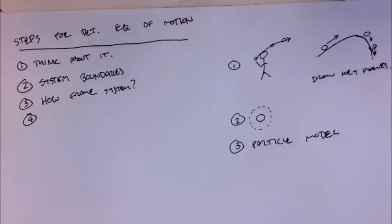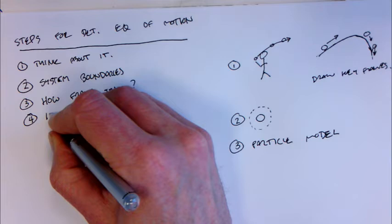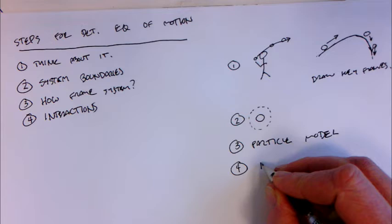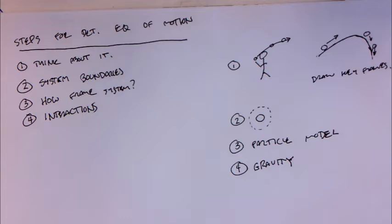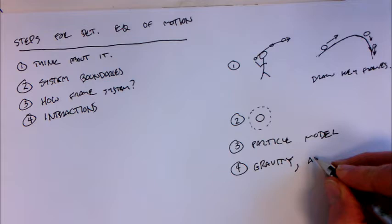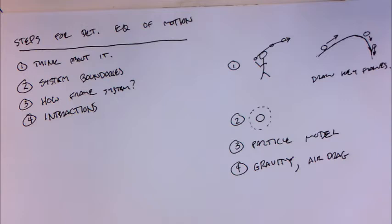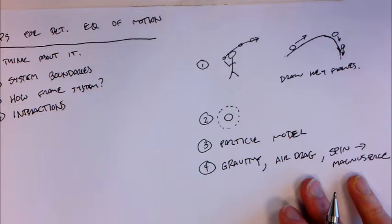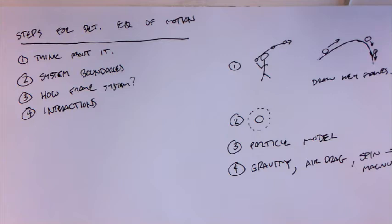The fourth step is to think about interactions. Now that we've identified what the system is and how we're going to model it, we think about what are the ways the ping-pong ball interacts with the rest of the universe. One obvious way is gravity — there's a gravitational interaction between the ping-pong ball and the Earth. Traveling through the air, the ping-pong ball also experiences some kind of air drag, so drag is probably going to be important. And if you've given it some spin, it's also possible to have a Magnus force. For the purposes of this video, we're going to ignore Magnus force and simply deal with drag and gravity.